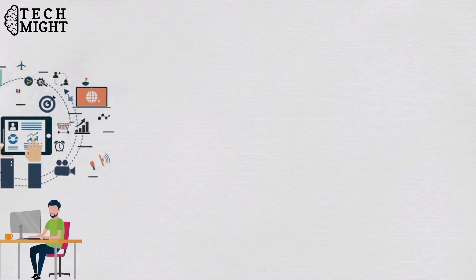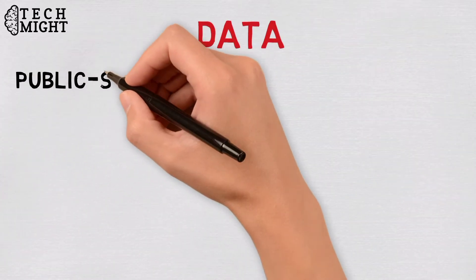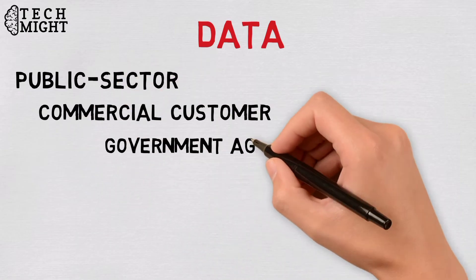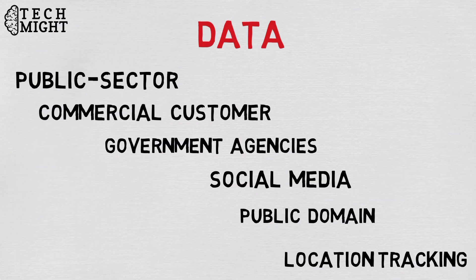IOB can gather, combine, and process data from many sources including citizen data processed by the public sector, commercial customer data, government agencies, social media, public domain, and location tracking. The increasing sophistication of the technology that processes this data has enabled this trend to grow.